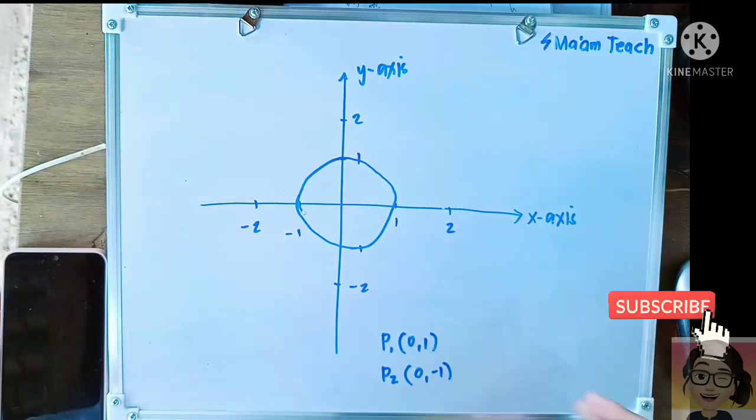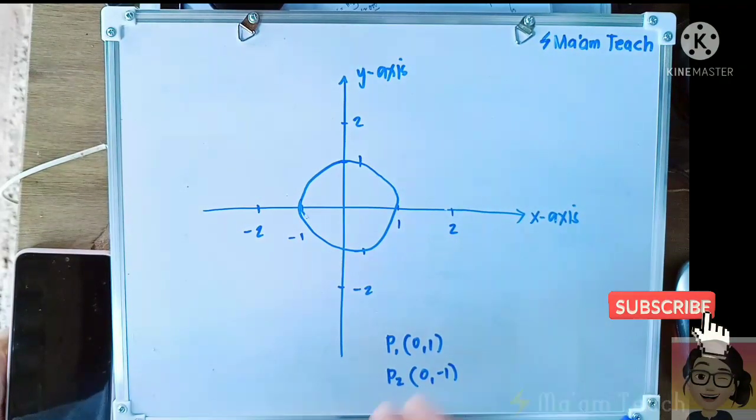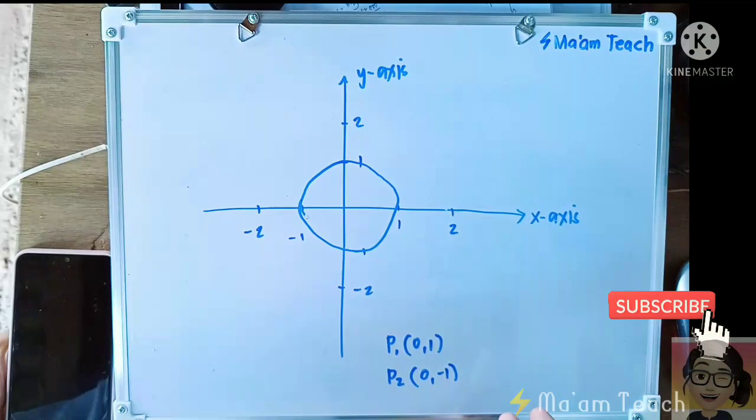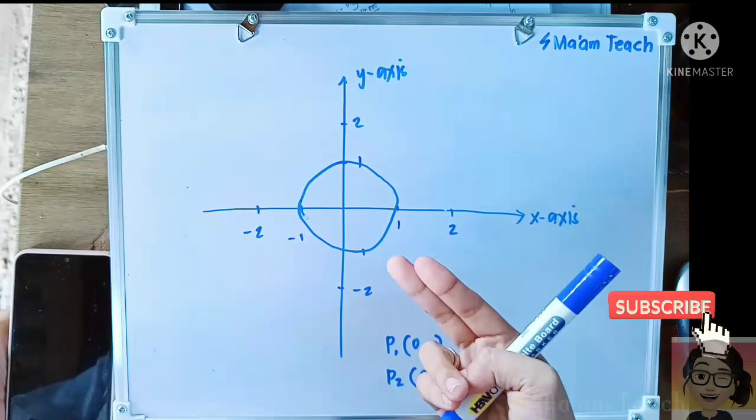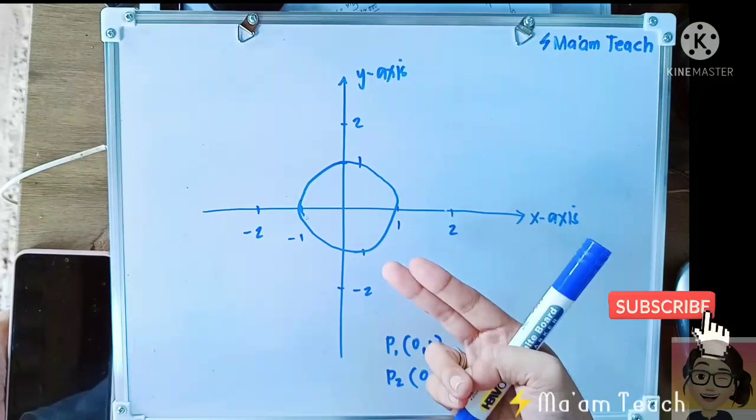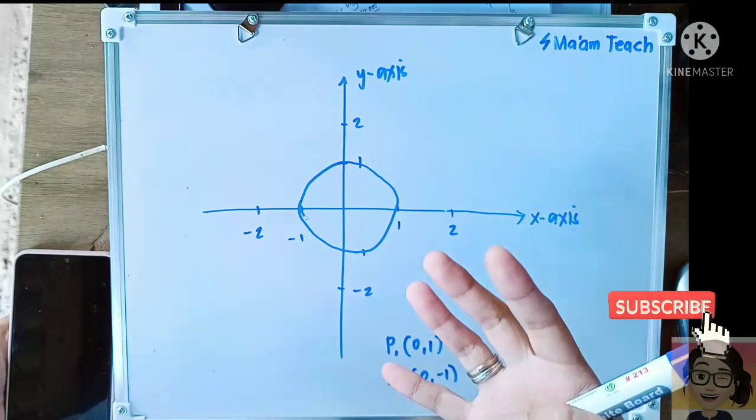Okay class, here's an example of why we can say that a vertical line is not a function. As you can see, we have a graph here which is a circle. A circle is an equation.